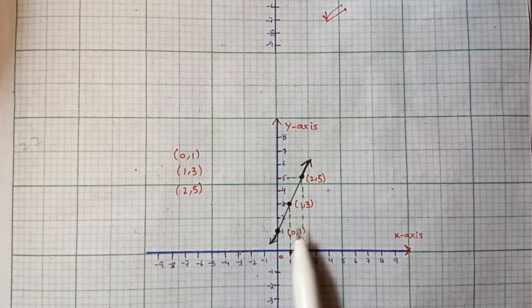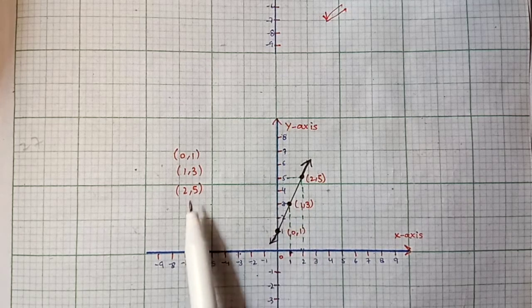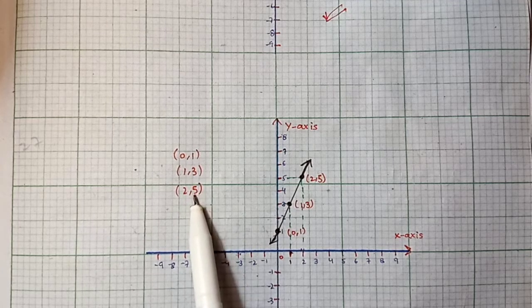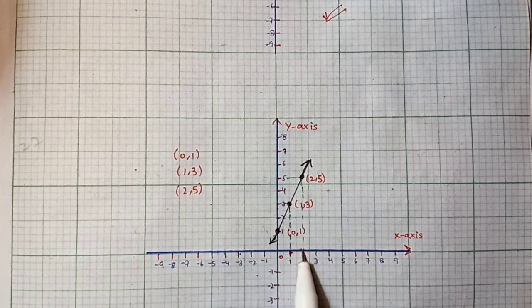Third, we have (2,5) where x = 2 and y = 5. We locate x = 2 and y = 5 on the graph and plot this point.